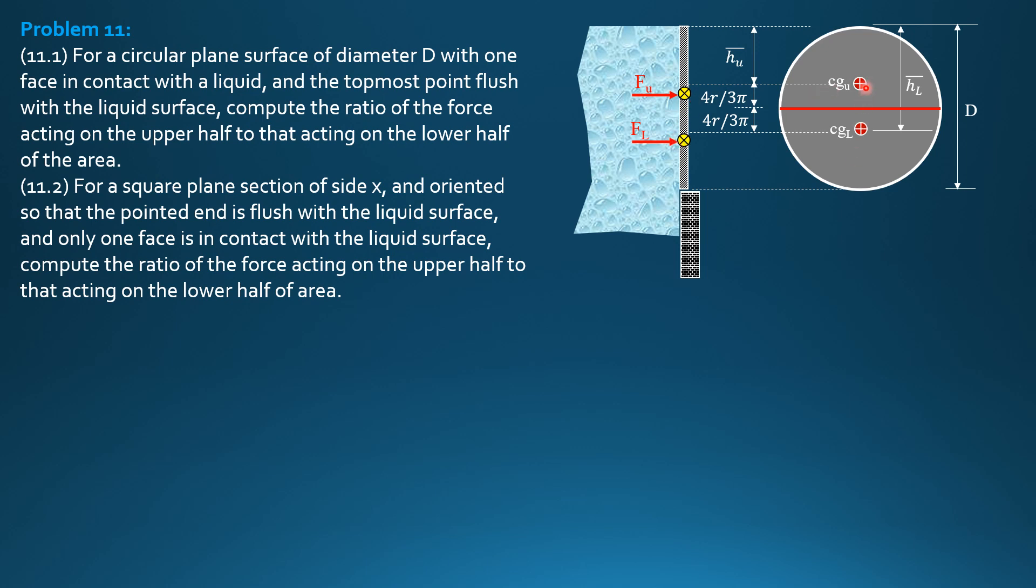Remember, there is still x and y between CG and center of pressure. Since the centroid of a semicircle is 4r over 3pi from the diametric line, so this is also 4r over 3pi, and the areas of the upper half and lower half are equal.